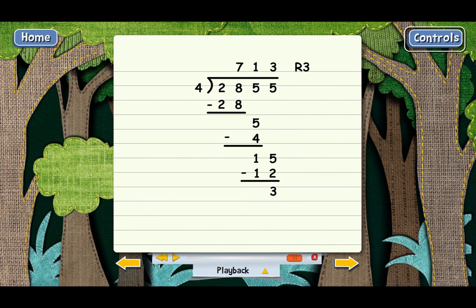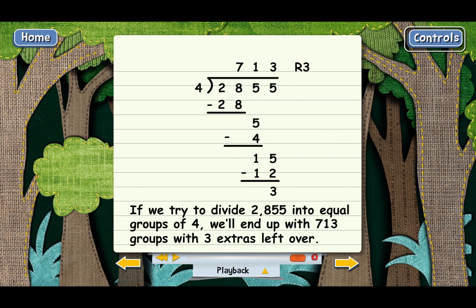And what this means is that if we try to divide 2855 into equal groups of 4, we'll end up with 713 groups with three extras left over.